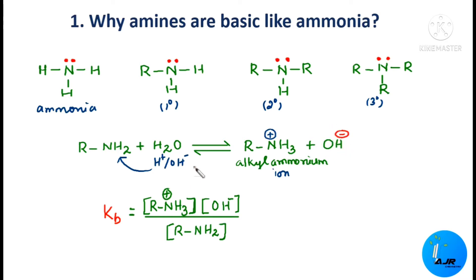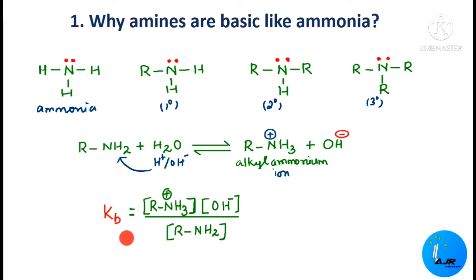Now when we apply the law of mass action for this equation, we get Kb equal to the concentration of alkyl ammonium ion and concentration of OH⁻ divided by the concentration of R-NH₂. We are not taking water into the concentration since it is in a large amount. This Kb describes the relative strength of the bases — it is the measure of the extent to which an amine can accept a proton from water. This Kb is otherwise called the dissociation constant or basicity constant.